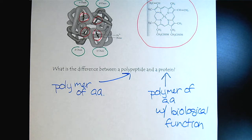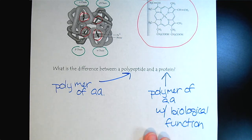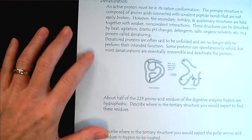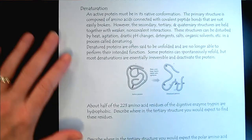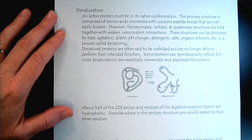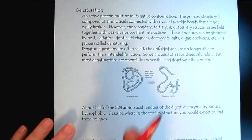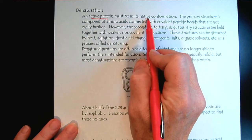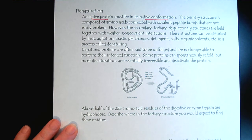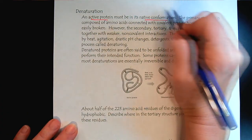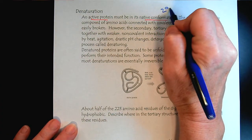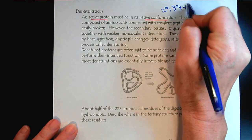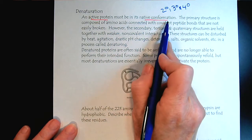Another topic that comes up as we look at quaternary structure is we can explore the concept of denaturation. Denaturation has to do with the fact that an active, biologically active protein must be in its native conformation. That's the conformations - secondary, tertiary, and quaternary. That would be the conformation.